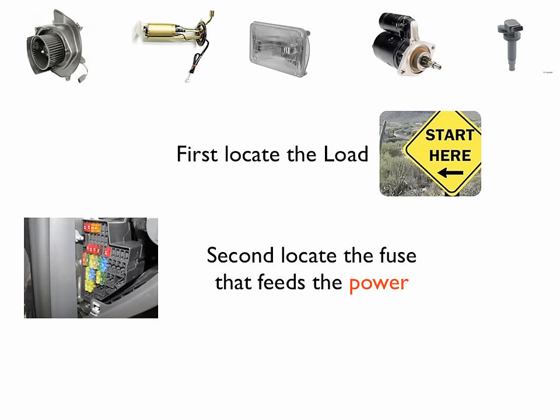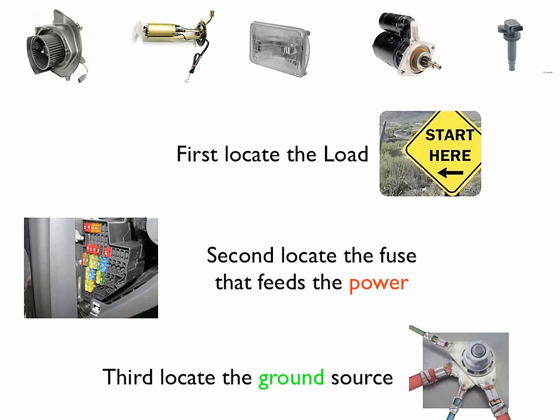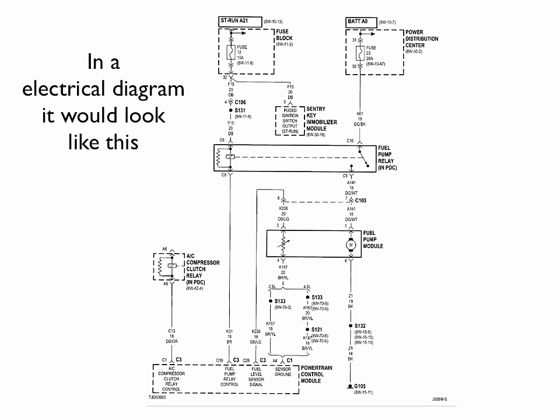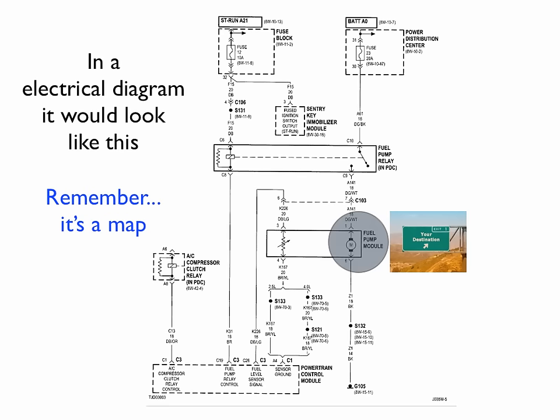The second thing to do is locate the power source or the fuse that feeds the power. And the third is to locate the ground source, where the ground originates. In an electrical diagram, it would look a lot like this. We first would locate the load. Now remember, this is a map, so this is your destination, where you want to end up.